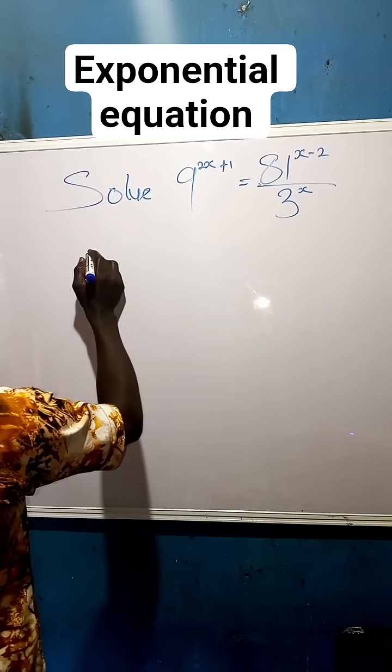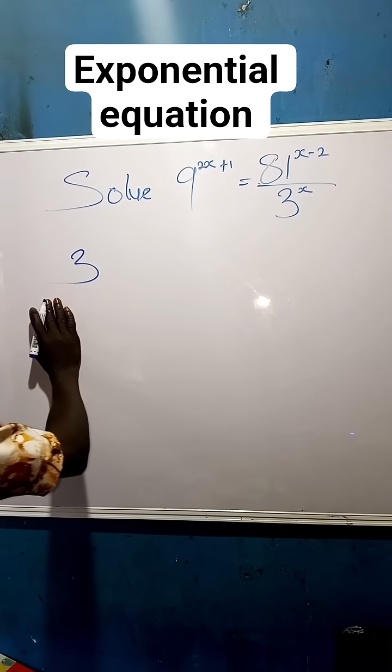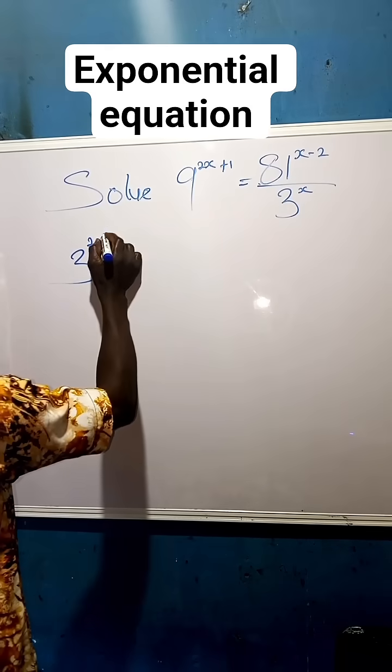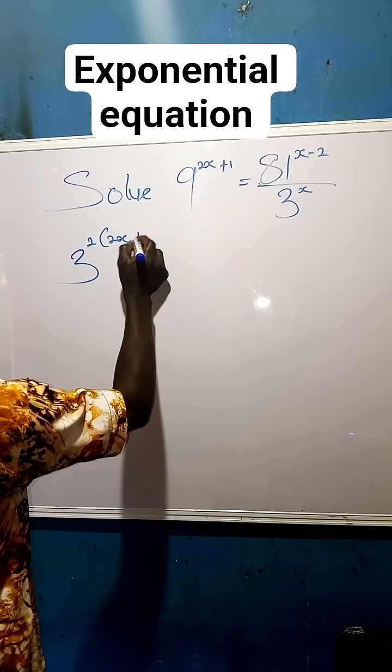You see, we're using 9 here. We can write it to be 3 raised to the power of 2, then multiply by 2x plus 1.